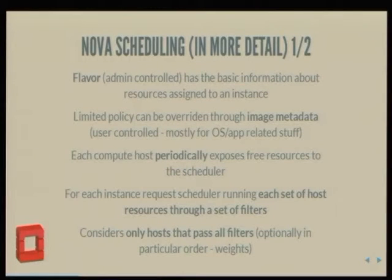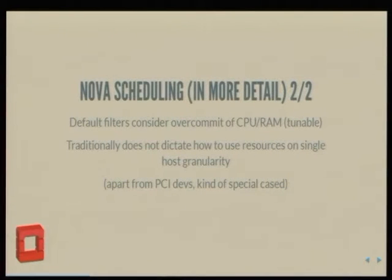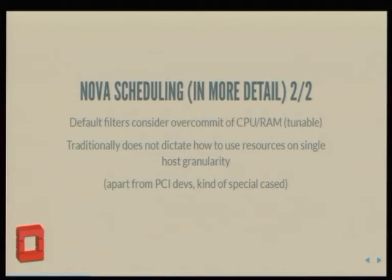Scheduling has no optimal placement. It just has a list of all the hosts and puts them through a set of filters that the admin can tune. Filters are functions that return true or false for any given host in your pool of compute hosts. Most of the filters are written without considering specific devices or resources — just how many of them there are, and grabbing whatever's there. That poses a problem when you want to think about how to actually assign a specific resource, like a specific CPU or PCI device, to a VM.